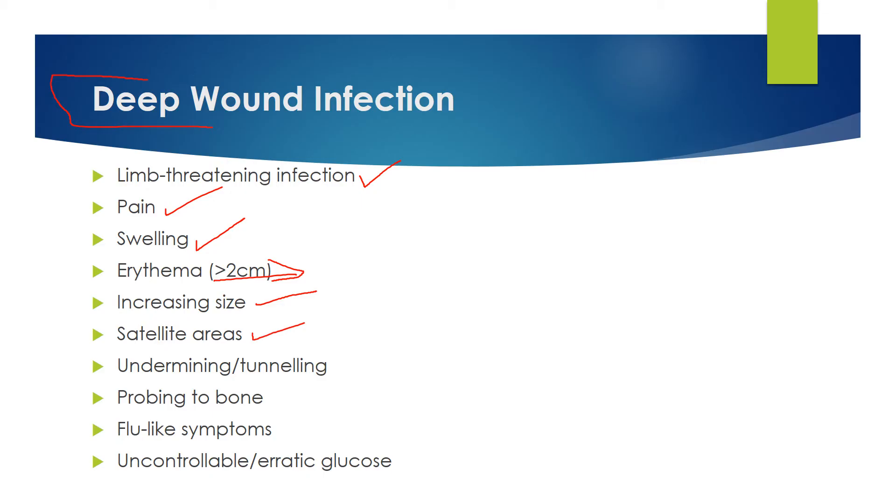Satellite areas are also a very bad sign in deep wound infections. Basically, what this means is that the infection, if you had for example a cut on your elbow or something that has become infected or some other deep wound infection, it's showing up in other places.